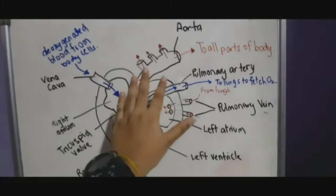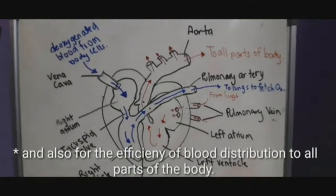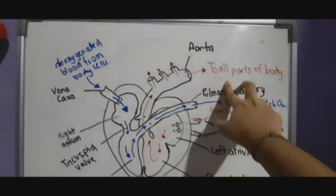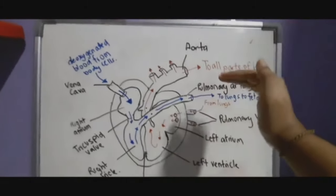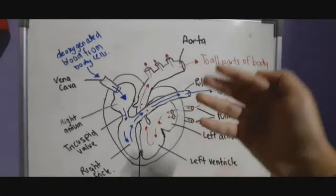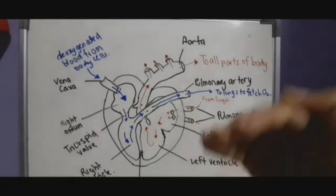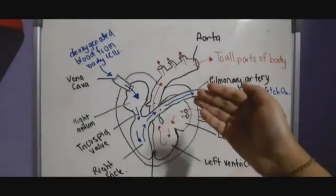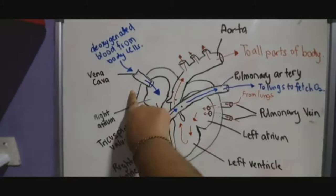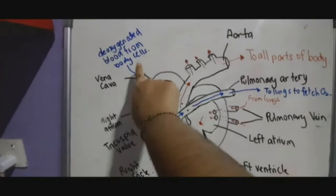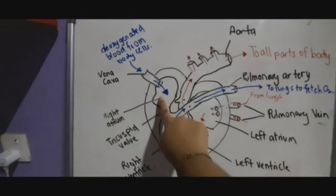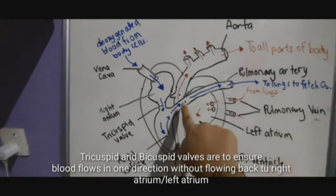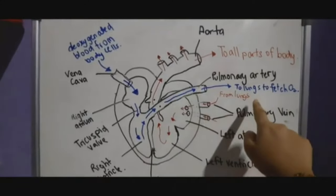From the left ventricle, oxygenated blood passes through the semilunar valves and into the aorta — the biggest artery in the heart — which must withstand the high pressure of oxygenated blood. The blood then flows to all parts of the body. At the body cells, oxygen is taken up and carbon dioxide is released, making the blood deoxygenated. The deoxygenated blood flows into the vena cava, then into the right atrium, through the tricuspid valve, and into the right ventricle.